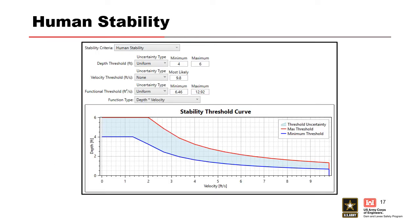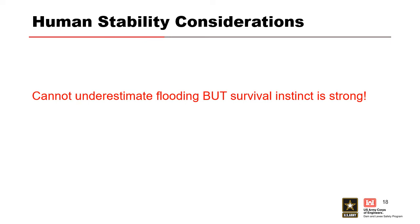This results in a human stability function within LifeSim showing the full range from trained workers to average adults. The blue area represents uncertainty. Below the blue line, stability is not surpassed. Above the red line, a person has fallen and is in need of rescue. As noted, there are case histories where people have defied the odds and survived very hazardous situations, and also people who tripped and fell in the wrong place at the wrong time. Being in a high hazard zone does not necessarily mean a person will lose their life.